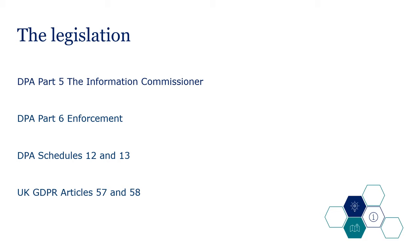We will also look at UK GDPR Articles 57 and 58, because this outlines the tasks and powers of the Commissioner.